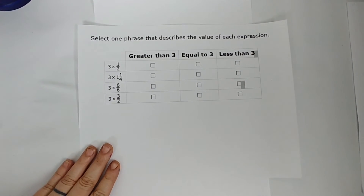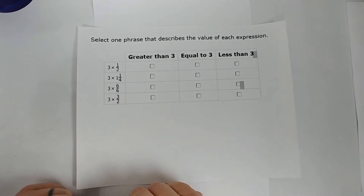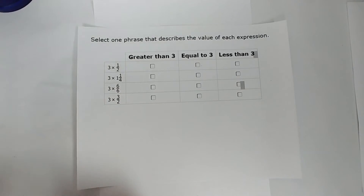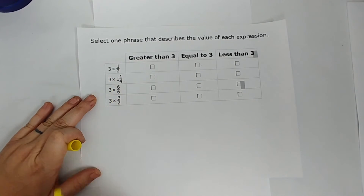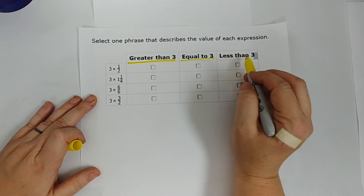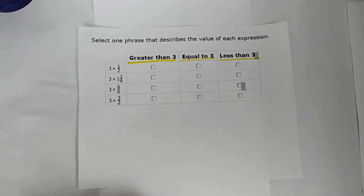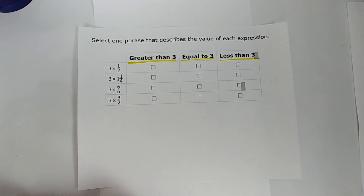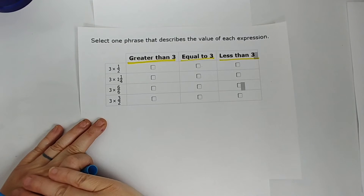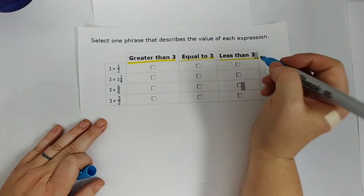Here's another problem type. It's one problem with multiple parts — you have to answer all of them for credit. It says: select one phrase that describes the value of each expression. Each expression is 3 times something, and the phrases are: greater than 3, equal to 3, or less than 3. To be greater than 3, multiply by more than 1. To be equal to 3, multiply by 1. To be less than 3, multiply by something less than 1. So: 3 times one half — one half is less than 1, answer is less than 3.